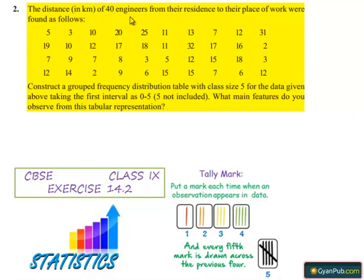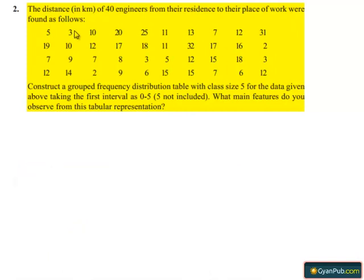The distance in kilometers of 40 engineers from their residence to their place of work were found as follows. Construct a grouped frequency distribution table with class size 5 for the data given above, taking the first interval as 0 to 5. What main features do you observe from this tabular representation?